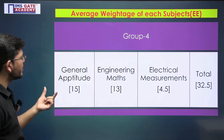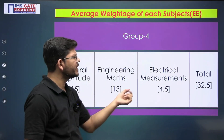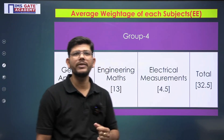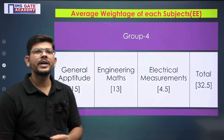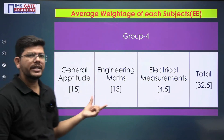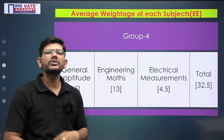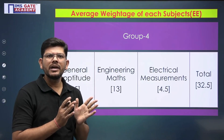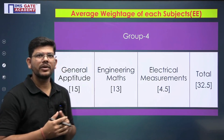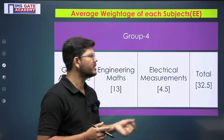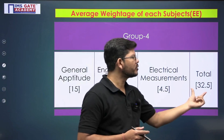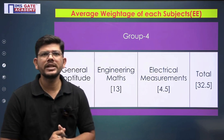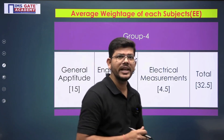Group four consists of General Aptitude, Engineering Mathematics, and Electrical Measurements, with a combined weightage of around 32.5 marks. For the aptitude and mathematics sections, you don't need to work extremely hard — they just demand consistency. If you maintain that consistency, you will surely be able to score these 32.5 marks.